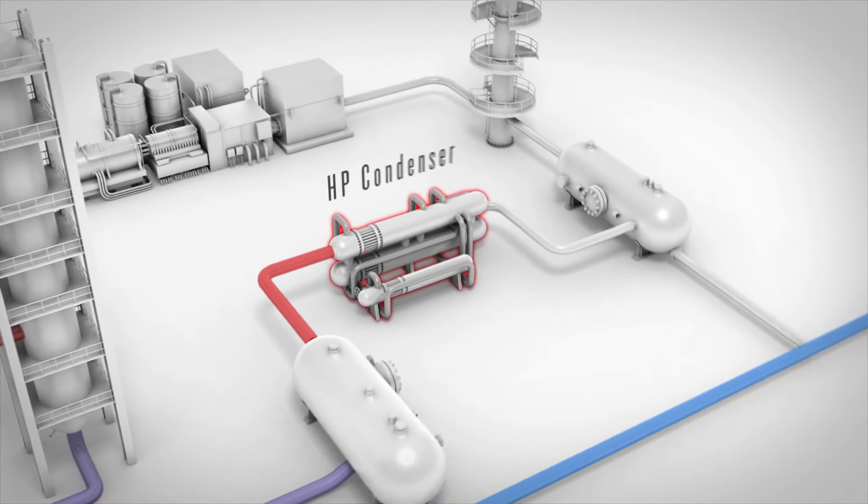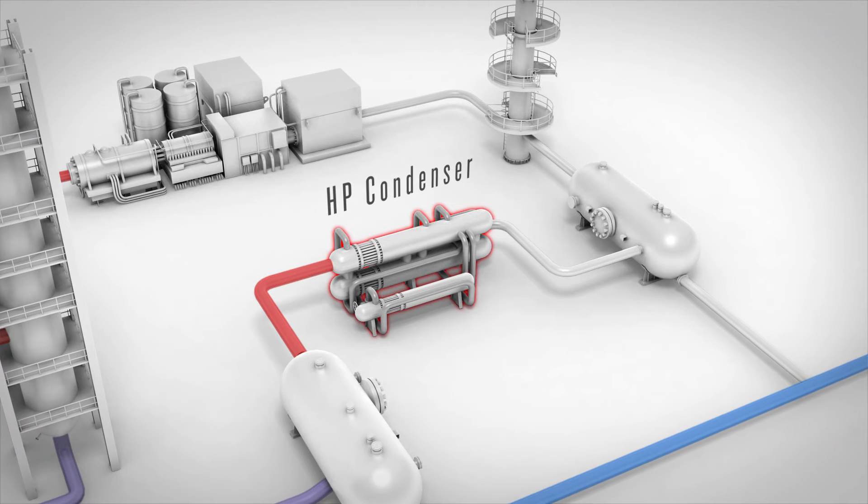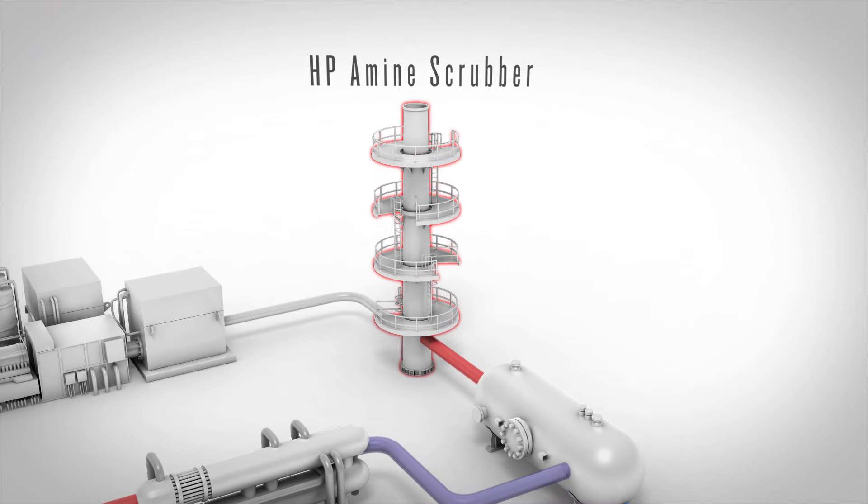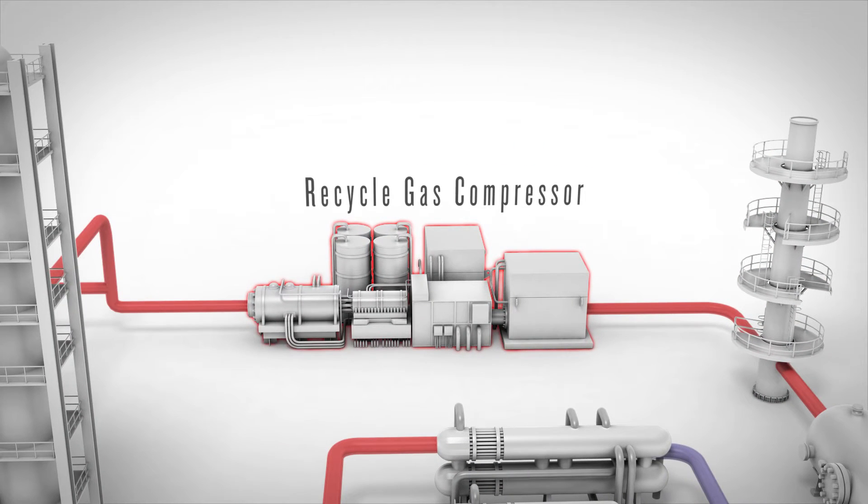While the overhead flows to a high-pressure condenser, to a cold high-pressure separator, to a high-pressure amine scrubber, then back to the recycled gas compressor.